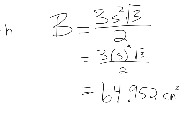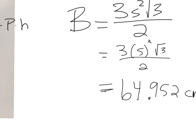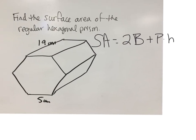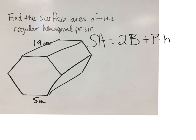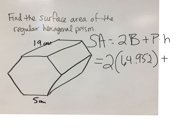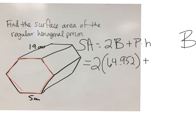Hang on to that — 64.952 — because we're going to need it for our formula. So back here: 2 times that base area, 64.952, plus the perimeter. The perimeter of our hexagon is the distance all the way around: 5 plus 5 plus 5 plus 5 plus 5 plus 5 gives a perimeter of 30, times the height. The height for my prism is the distance between my hexagons, which in this case is 19.